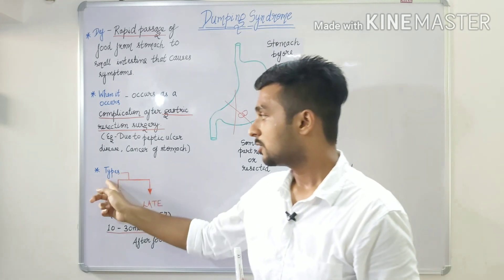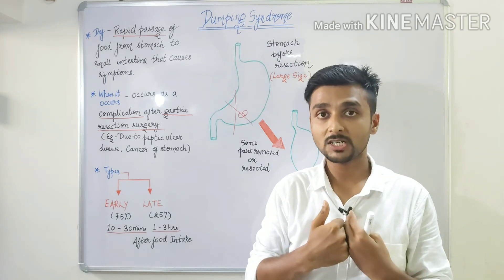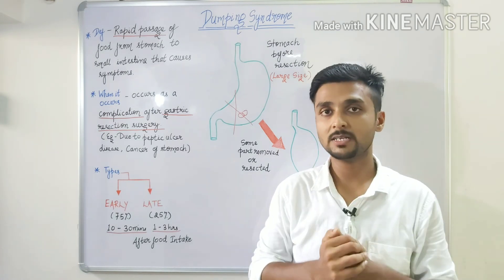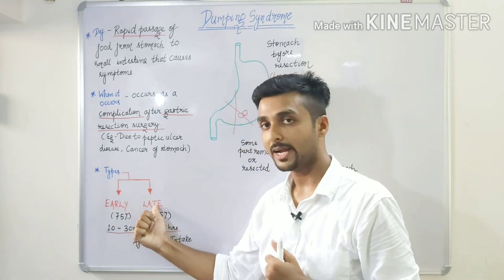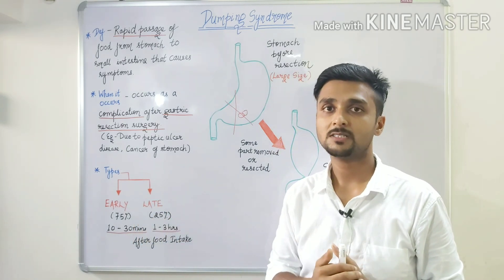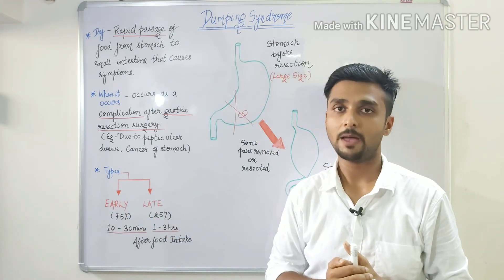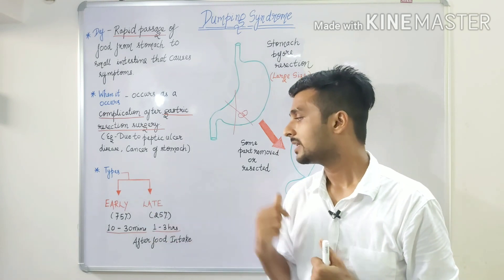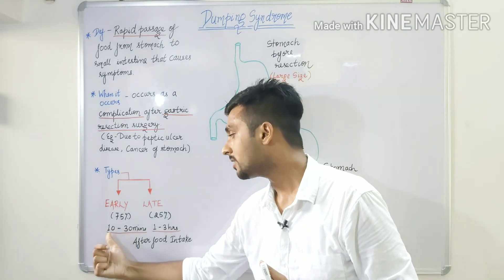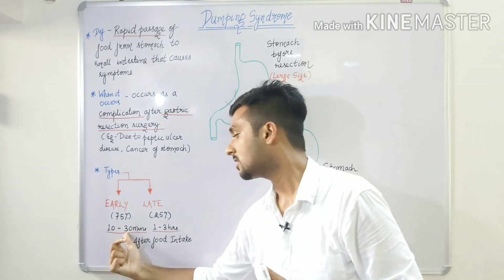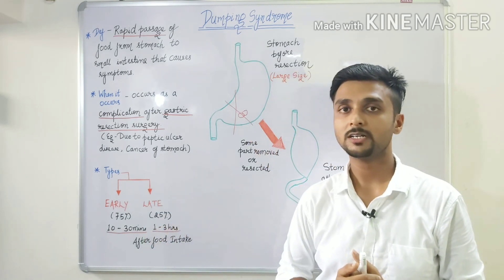Next, let's talk about the types of dumping syndrome. We classify it in two ways based on when symptoms appear after eating. In 75% of cases after gastric resection surgery, it is early dumping syndrome, and in 25% of cases, late dumping syndrome. Early dumping syndrome presents with symptoms within 10 to 30 minutes after food intake, while late dumping syndrome presents with symptoms 1 to 3 hours after food intake.